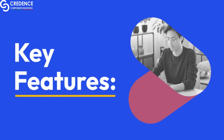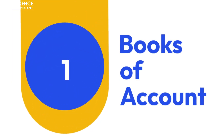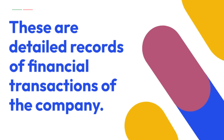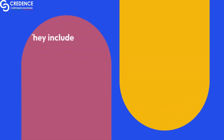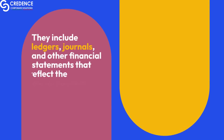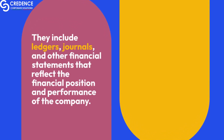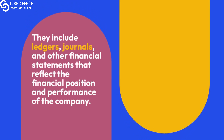Key Feature 1: Books of Account. These are detailed records of financial transactions of the company. They include ledgers, journals, and other financial statements that reflect the financial position and performance of the company.